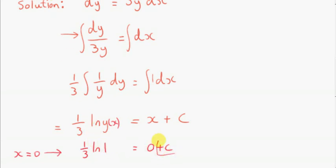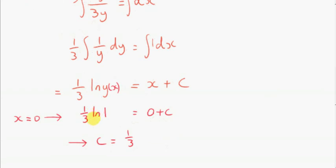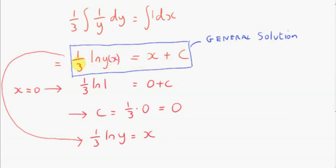So now we've found c. c is just one third ln of 1. ln of 1 is actually 0 — ln of 1 is just log to the base e of 1, and e to the 0 is 1. So c is one third times 0, which is 0. By the way, this gives us the general solution of the differential equation. It's called a general solution because we have a general constant c that can be any number, and this will satisfy the differential equation. Down here, we have what's called a particular solution — the general solution for a particular value of c, namely c equals 0 in this case.